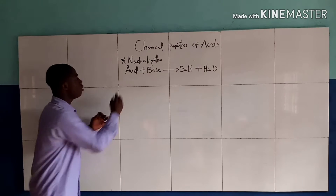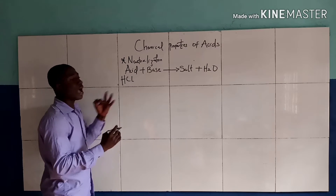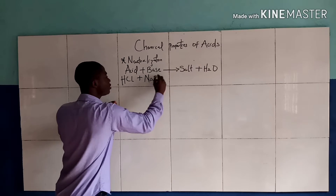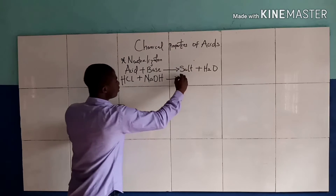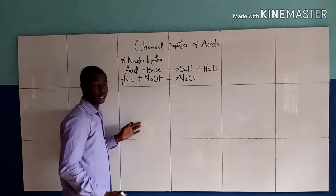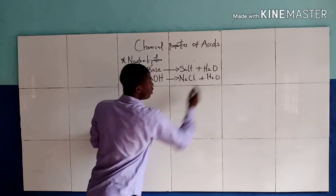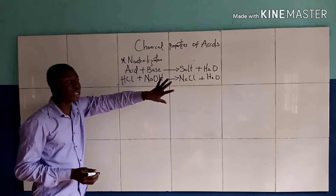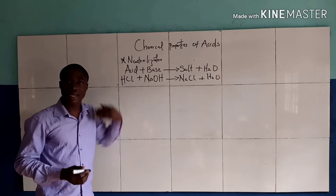For example, we are given hydrochloric acid reacting with a base like sodium hydroxide, and we get sodium chloride plus water. This is an example of a neutralization reaction, which is a chemical property of an acid.